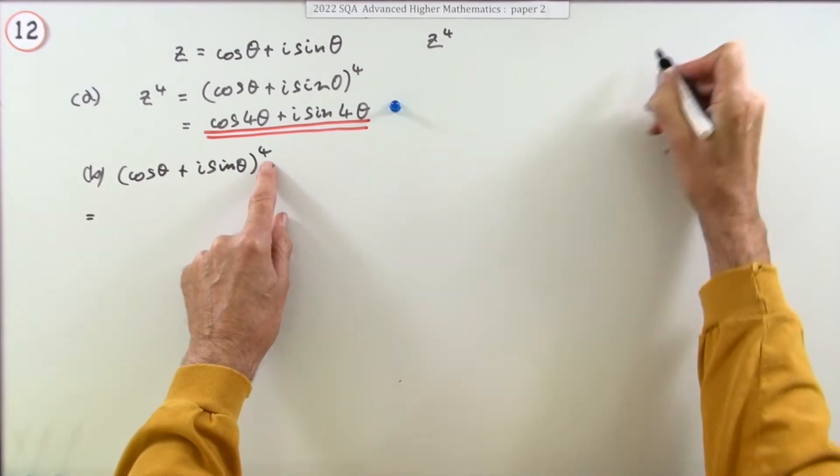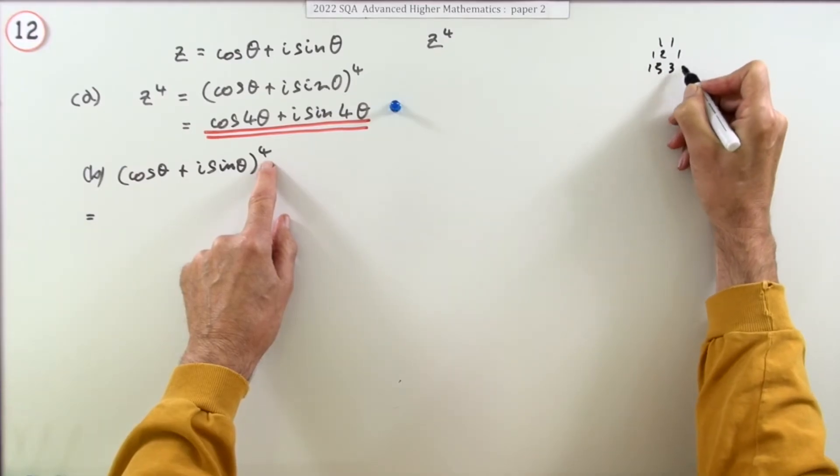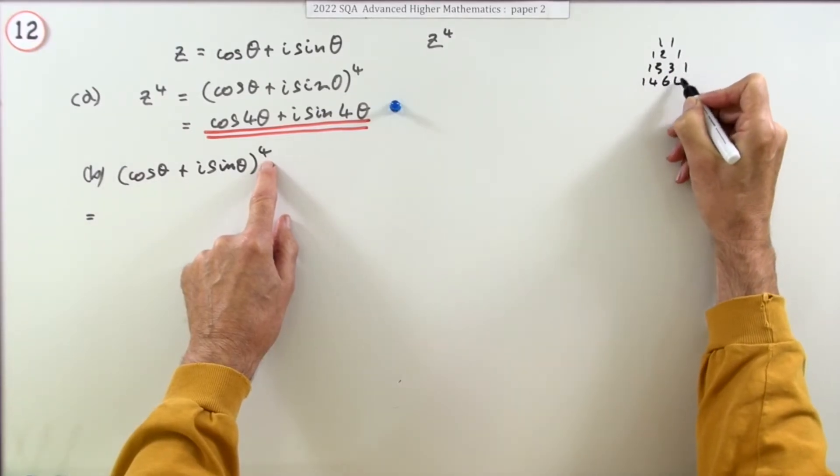Well, power 4 coefficients, if you don't remember them: 1, 1, 2, 1; 1, 3, 3, 1; 1, 4, 6, 4, 1.